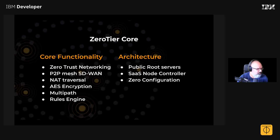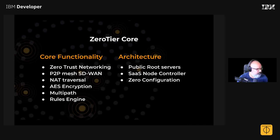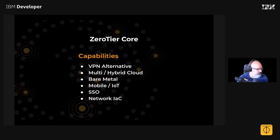We also have a sophisticated rules engine, which I'll go into later. To make this work, we have a three-tier architecture. We host, as a public service, things called root servers — I have slides about those. We are currently selling the network controller component as a SaaS. With these two things, you get a zero-configuration experience: you just put ZeroTier on a device, give it a network address, and it just works.